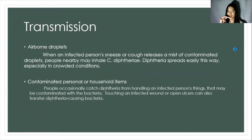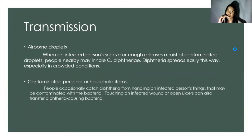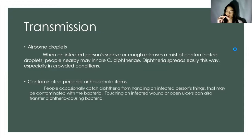Next is the transmission of the disease. One way of transmitting the disease is from airborne droplets. When an infected person sneezes or coughs, it releases a mist of contaminated droplets, and people nearby may inhale the bacteria. Diphtheria spreads easily this way, especially in crowded conditions. Transmission is often person-to-person spread from the respiratory tract. Rarely, transmission may occur from skin lesions or articles soiled with discharges from lesions of infected persons. Diphtheria is caused by the bacterium Corynebacterium diphtheriae, and it usually multiplies on or near the surface of the throat.